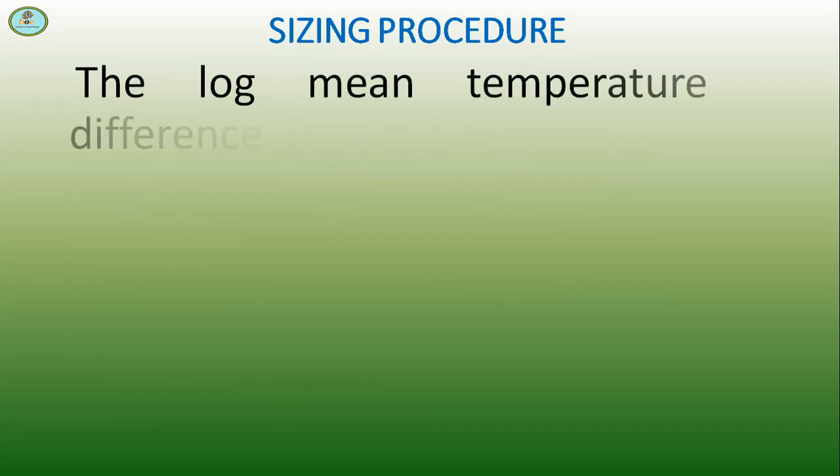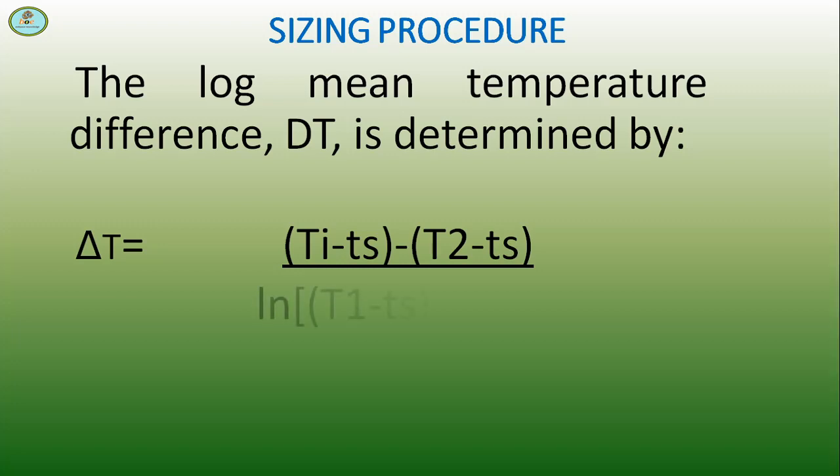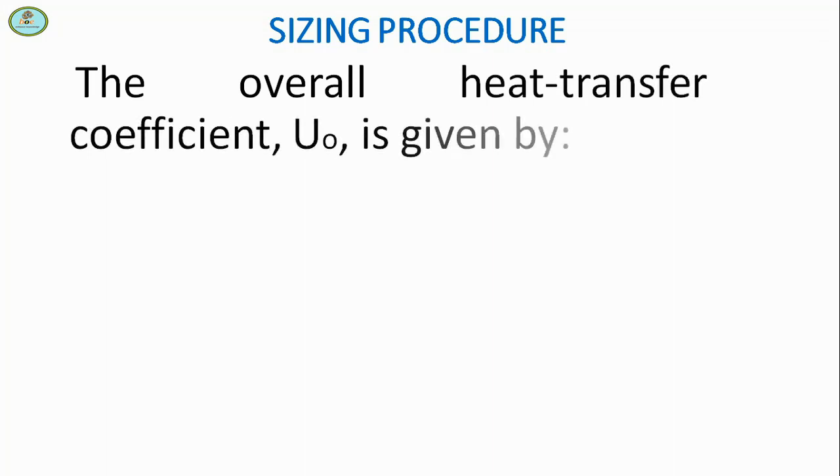The log mean temperature difference ΔT is determined by ΔT = [(Tᵢ - Ts) - (T₂ - Ts)] / ln[(Tᵢ - Ts) / (T₂ - Ts)]. This is equation 3.